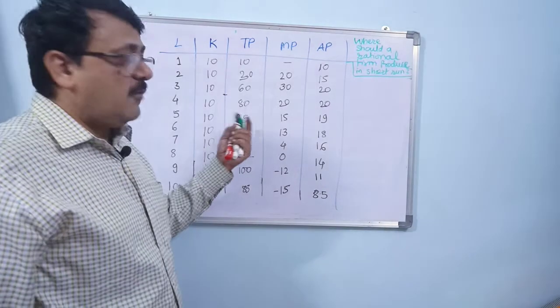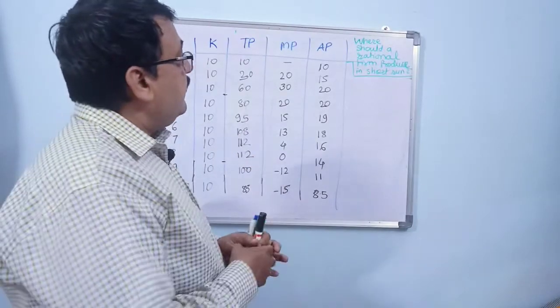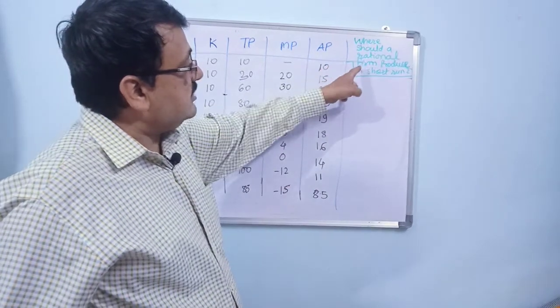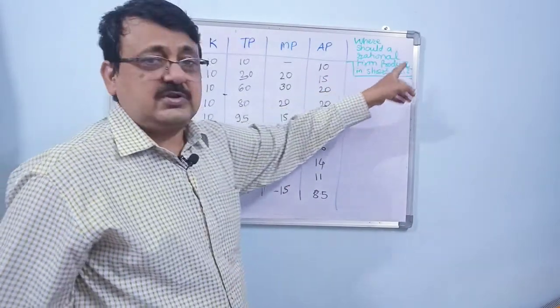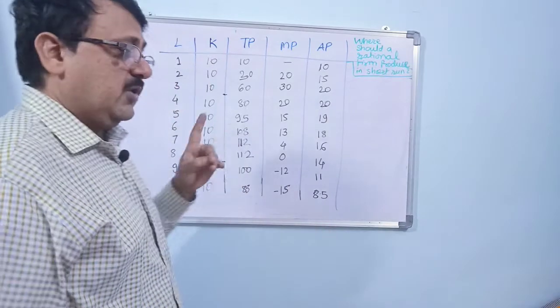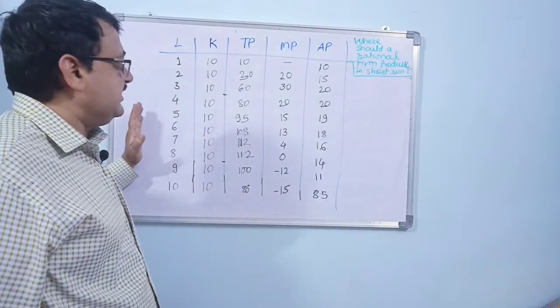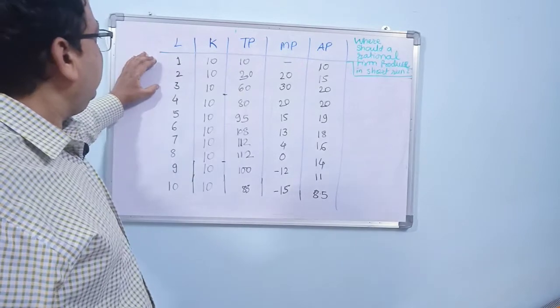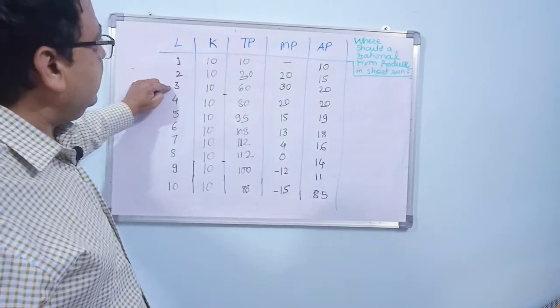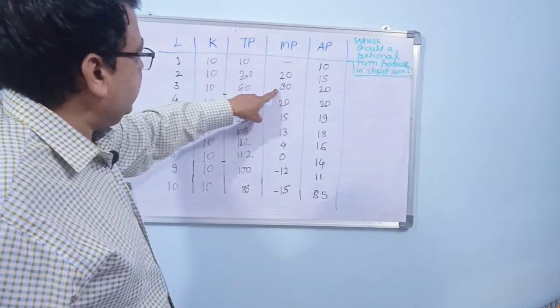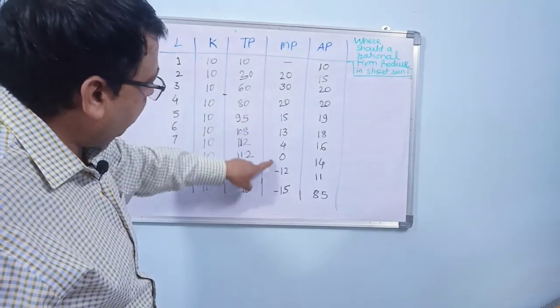In the short run law of production, let us see where a rational firm should produce. I have drawn the same table here with slight changes. You can find that as labor was increasing, marginal product was also increasing, then it remained constant, and finally it became negative.